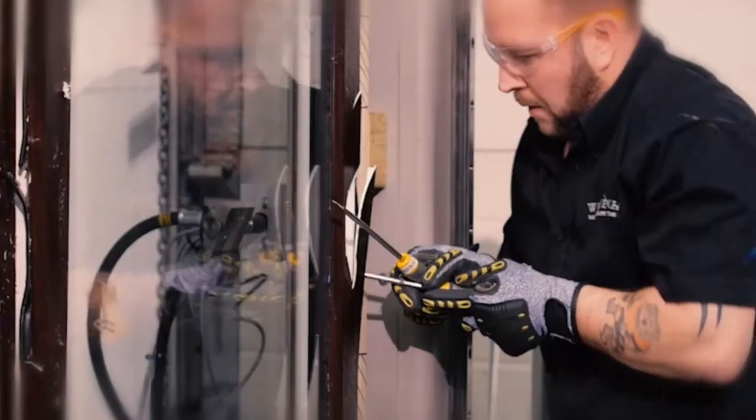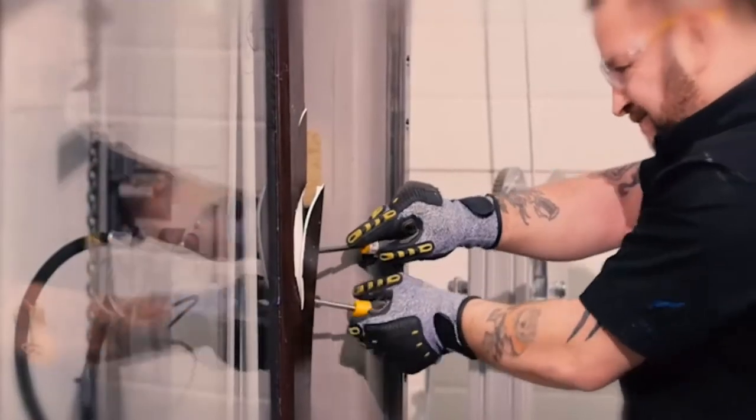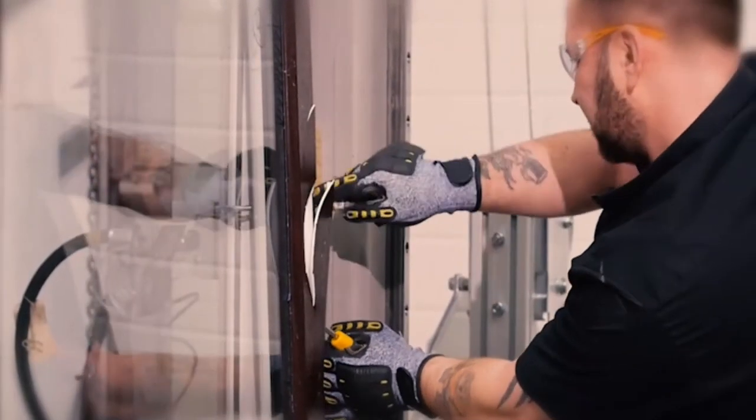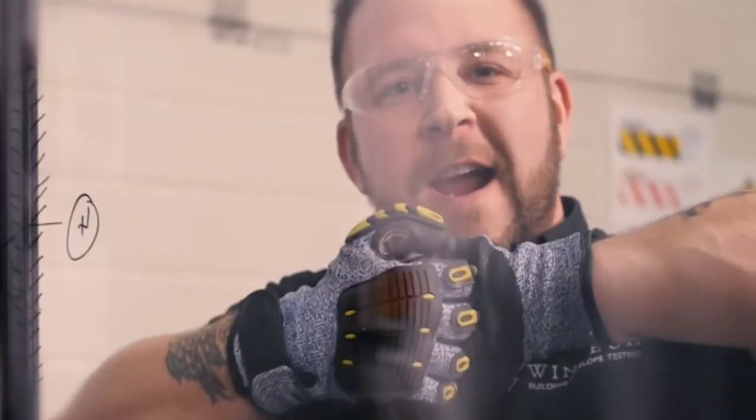When the jemmy didn't work, Dave reached for another burglar's tool of choice, the crowbar. Still failing, it was time for the screwdrivers. Using his size and all his strength, Dave spent well over 15 minutes trying to get GrabLock open, but all he managed to break is a bit of the UPVC casing and a pretty hefty sweat. GrabLock wins again.